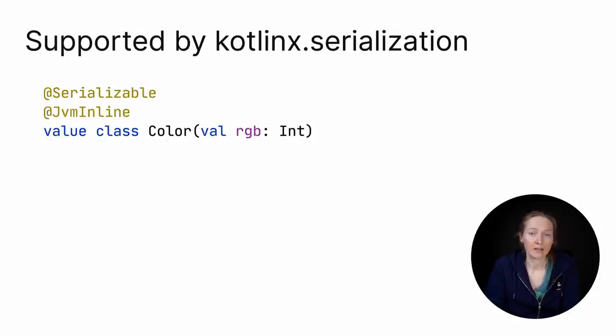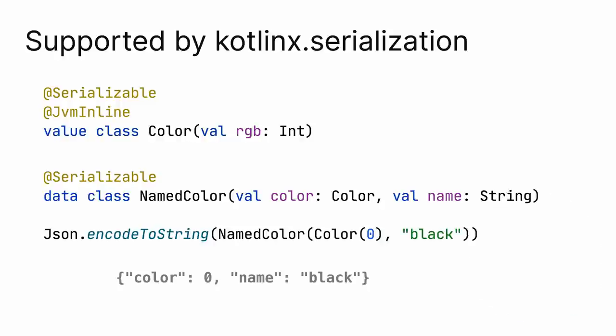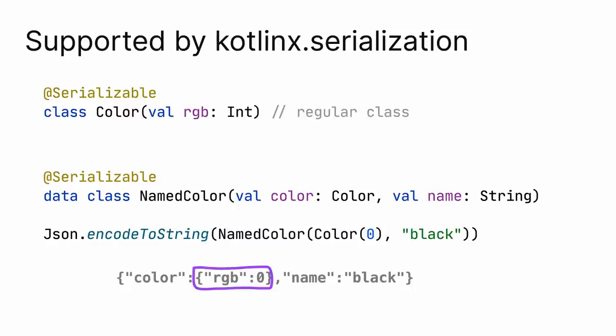Inline value classes are supported by the Kotlin X serialization library. You can mark an inline value class as serializable, and when encoding data to JSON format, you see only the underlying value included, not the whole class. If a regular class is encoded, you see it in the output as an extra class, like in this example. You see that the color is represented by a class having an RGB property.